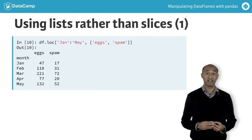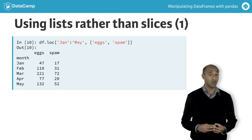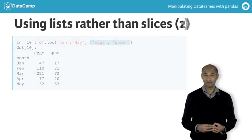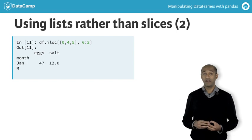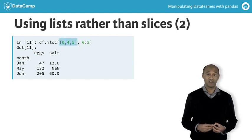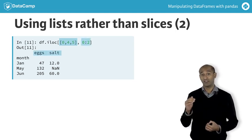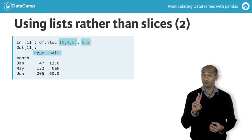Both the .iloc and .loc accessors can use lists in place of slices. Here is an example of using .loc and a list of two columns. Here is another using .iloc and a list of three rows. Remember, with .iloc, the column slice selects only two columns.